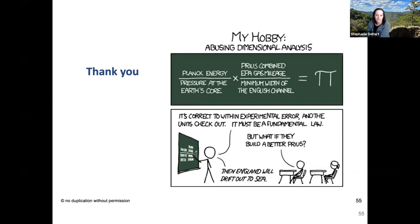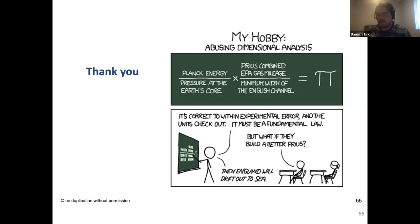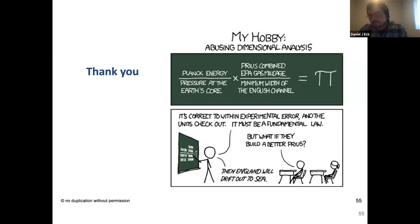A question from the audience: after getting the dimensionless pi groups, how do you decide which error structure to assume — is there any theory, or do you just add epsilon? Do you assume different responses have uncorrelated errors? Dan responds: they assume a plus-epsilon additive error structure and work in a setting where the dimensionless responses are uncorrelated. The rationale is provided in Section 4 of the paper: if you've captured all the dependence in the system through the model, the responses can be treated as uncorrelated.